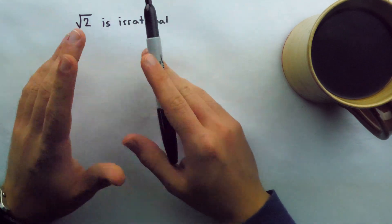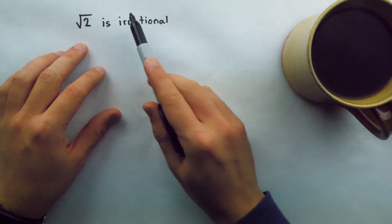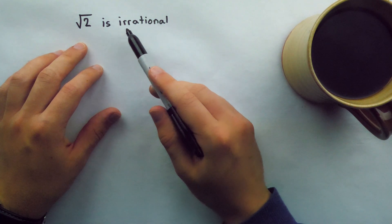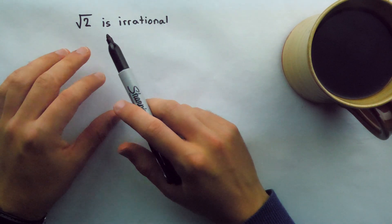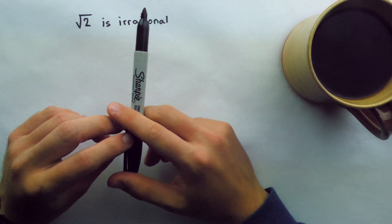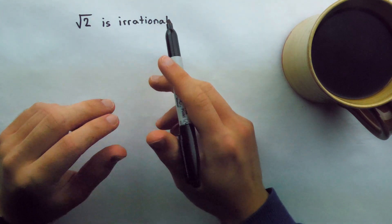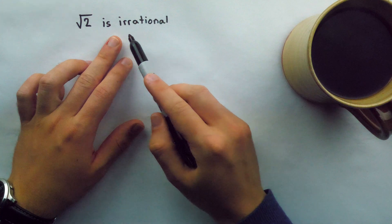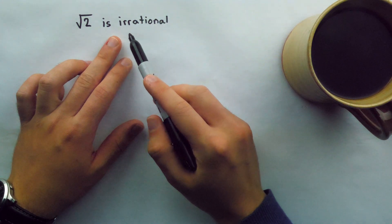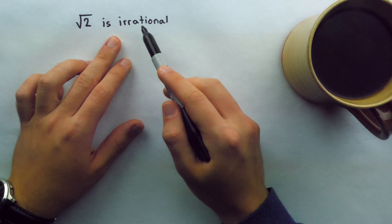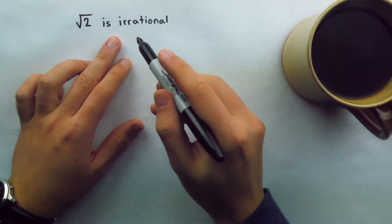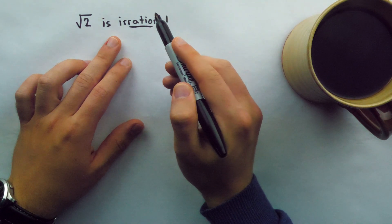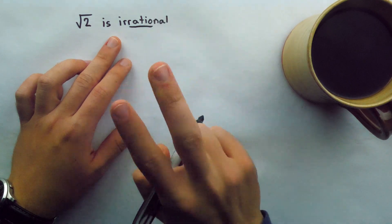We'll start with what irrational means. If you're not even sure what irrational means, or maybe you've never even done a proof, everything here I'll try to make as accessible as possible. For a number to be irrational means that it can't be expressed as a ratio of two integers.